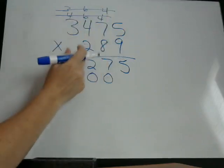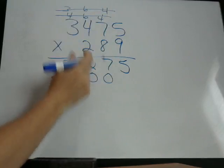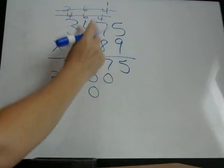Then we go to the next number. 2 times 5 is 10. Remember, we're going to put it under the 2. So we put 10, 1, 0.